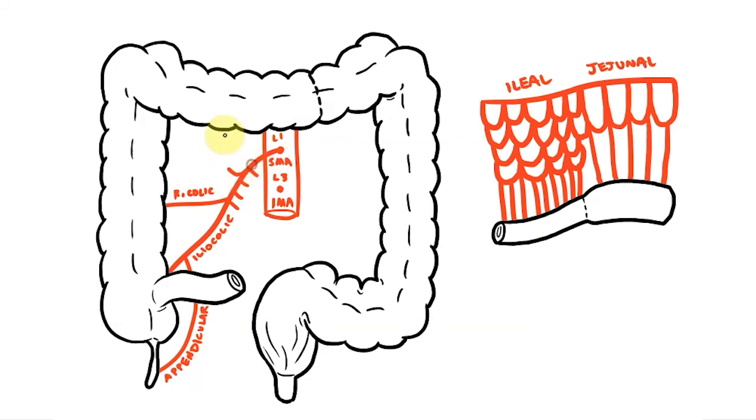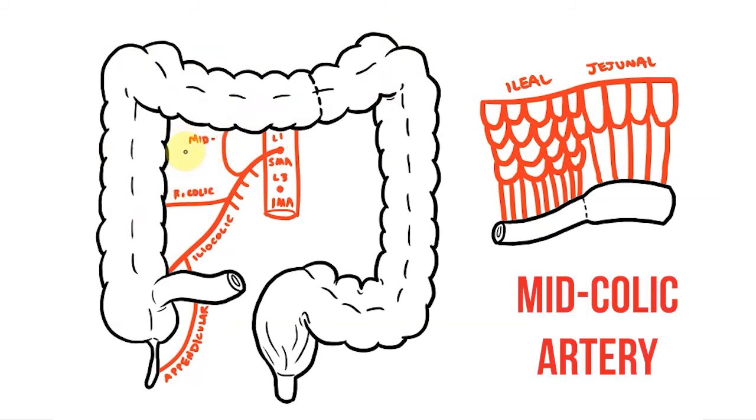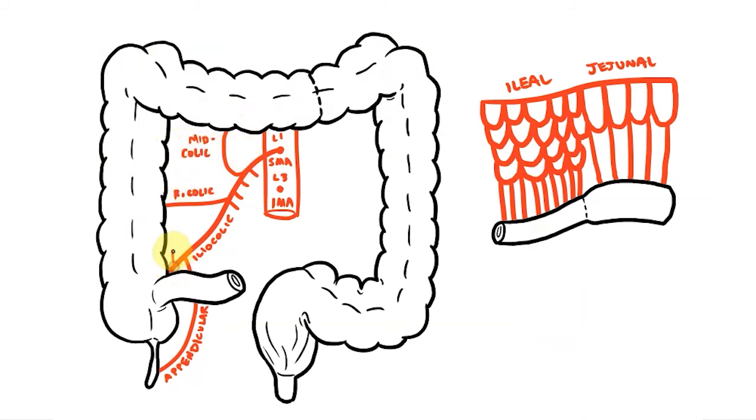The final branch heads straight up to supply the transverse colon. This vessel isn't on the right or the left so is known as the mid colic artery. These major arteries supply smaller branches that provide oxygenated blood to the entirety of the midgut.